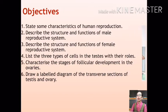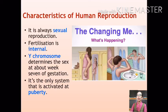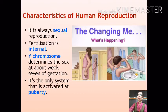Humans can only reproduce sexually by the union of egg and sperm cells. Although the reproductive systems of the male and female are different, they are structured to work together to achieve internal fertilization. Sperms produced by the male testes and the egg or ovum produced by the female ovaries fuse inside the female body.